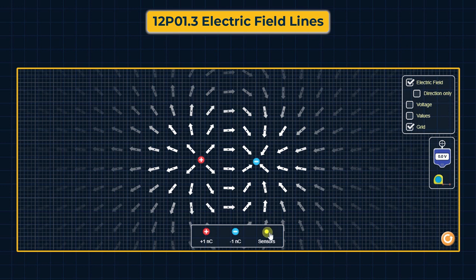Sensor के through देखें तो negative charge के right direction में electric field की direction left में दिख रही है — क्योंकि negative charge के कारण direction left होगी और positive charge के कारण right होगी, लेकिन हमारी position negative charge के ज़्यादा पास है, इसलिए net electric field left direction में होगा।